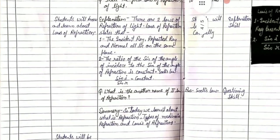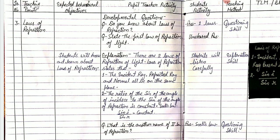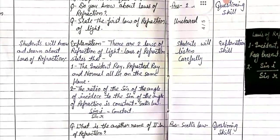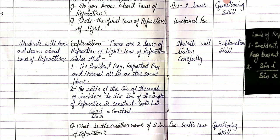Our third teaching point is laws of refraction. Before we start, we do some questions with students. First question: do you know about laws of refraction? Answer: two laws. Second question: state the first law of refraction. We found an unclear answer, then we start the explanation.